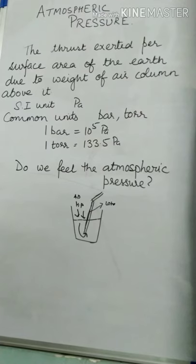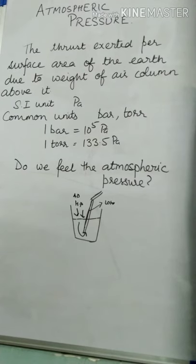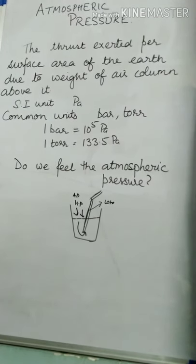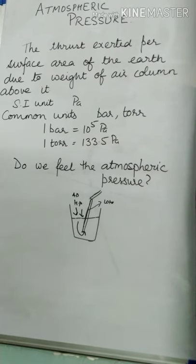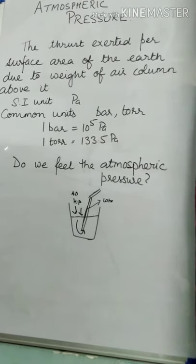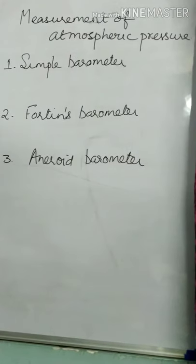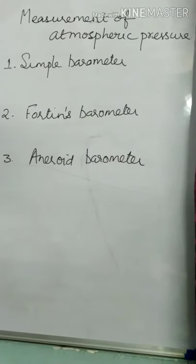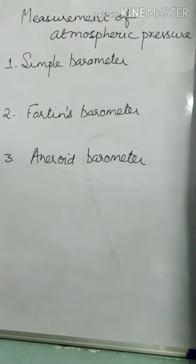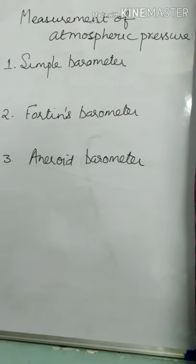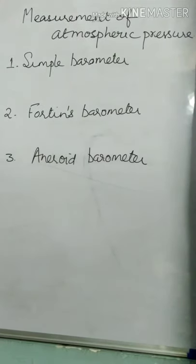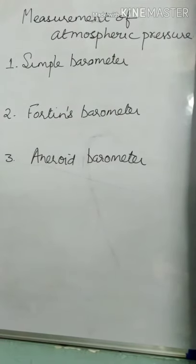When you want to measure atmospheric pressure, we have three kinds of instruments. The three devices used for the measurement of atmospheric pressure are: simple barometer, Fortin's barometer, and aneroid barometer.